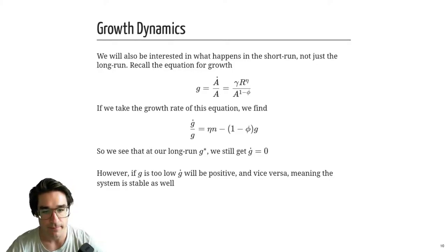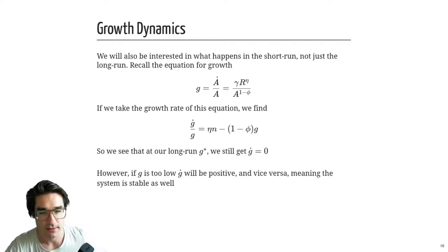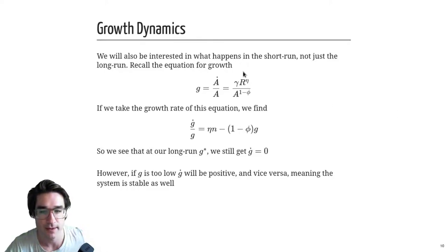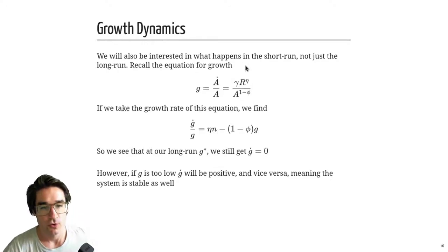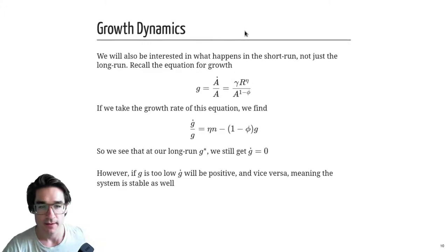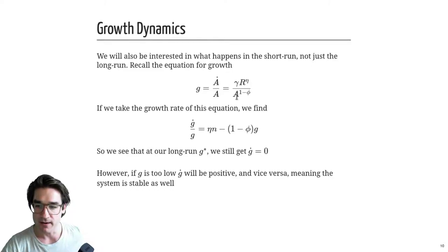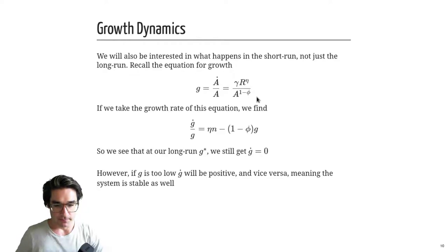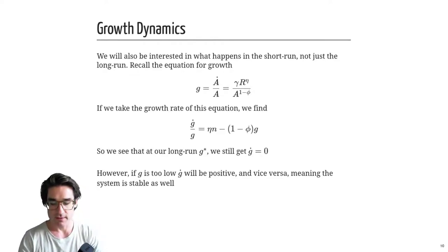In the short run, there are dynamics reminiscent of Malthus — you get some deviation but you return to G*. If you look at this growth rate equation and bump up R by increasing S, in the short run G goes up because A is fixed like capital. Then because growth is higher, A rises faster, which pushes growth back down. Eventually you return exactly back to G*.